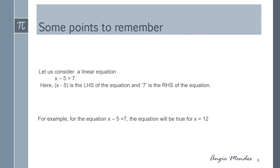There are a few points to keep in mind. For any linear equation, there will be an equal to sign. The quantity on the left of the equality sign is the left hand side and the quantity on the right is the right hand side. Consider x minus 5 equal to 7: x minus 5 is the left hand side and 7 is the right hand side. The values on both sides will be equal and true only for certain values of the variable, which we call solutions.